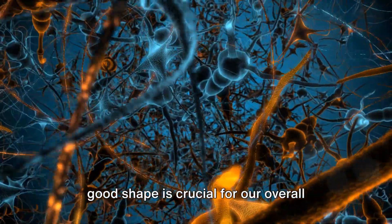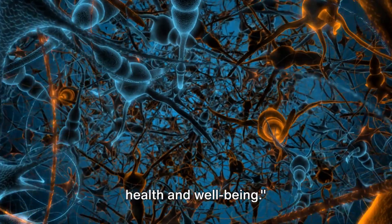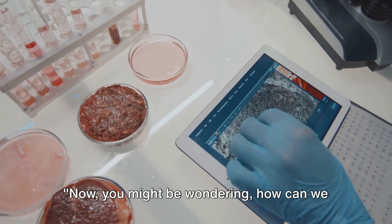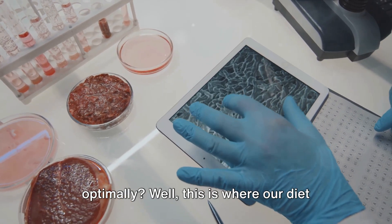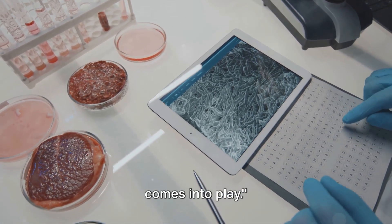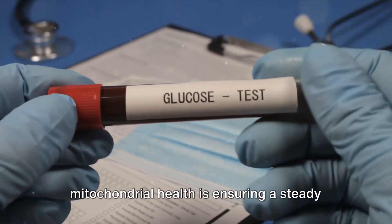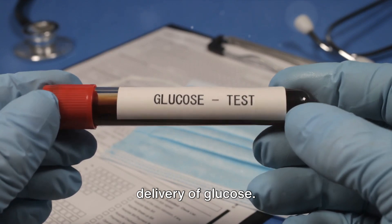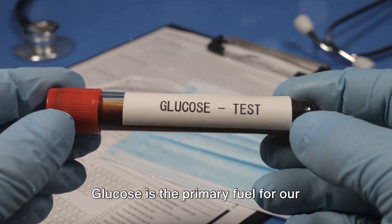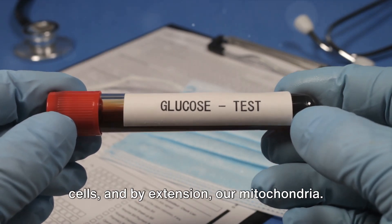Evidently, keeping our mitochondria in good shape is crucial for our overall health and well-being. Now, you might be wondering how can we ensure our mitochondria function optimally? Well, this is where our diet comes into play. One of the key strategies for maintaining mitochondrial health is ensuring a steady delivery of glucose. Glucose is the primary fuel for our cells and, by extension, our mitochondria.